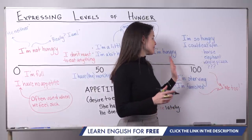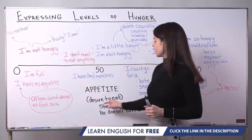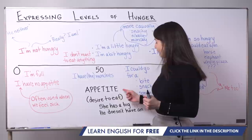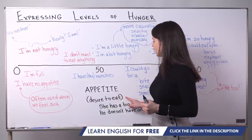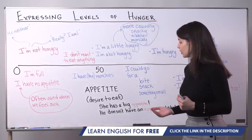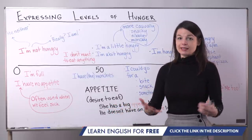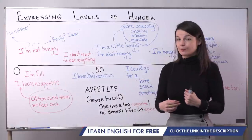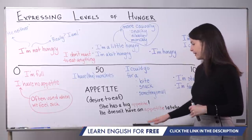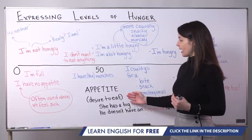I want to begin this lesson at this side of the scale. I've made this scale an appetite scale from zero to 100. Appetite is a word that means desire to eat — your appetite. This is a noun. In a sentence, we would use it something like this: 'She has a big appetite,' meaning she wants to eat a lot. Another example: 'He doesn't have an appetite lately,' meaning he doesn't want to eat very much lately.